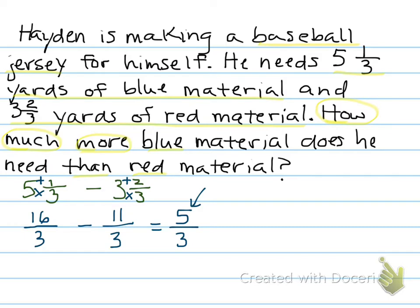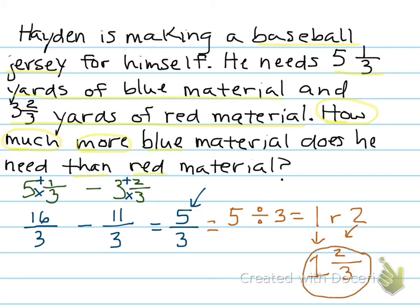I'm not going to leave it as an improper fraction. I'm going to change it back into a mixed number. You do that by numerator divided by the denominator. The quotient is 1, remainder 2. Your quotient becomes your whole number. The remainder becomes your numerator. And the denominator stays the same. So my final answer would be, Hayden needs 1 and ⅔ yards more blue material than red material.